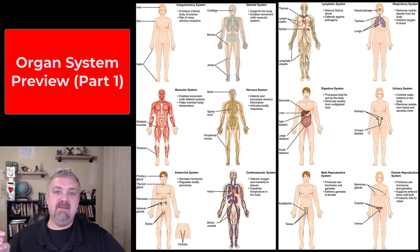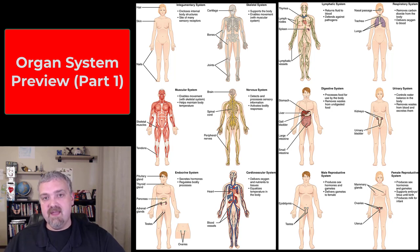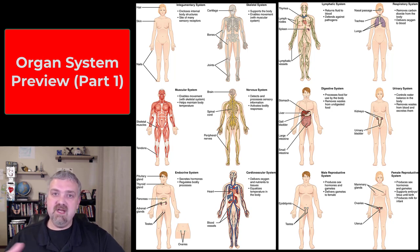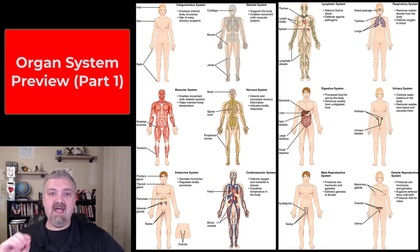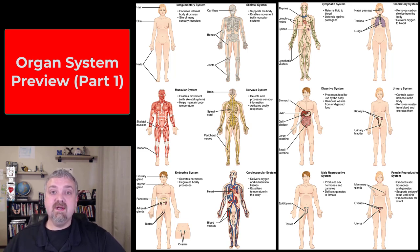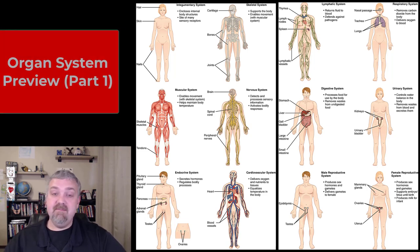Once we've covered atoms and molecules, put them together to form organelles and cells, and then put our cells together to form tissues, after those first few chapters, we'll dive into the organ systems. From there all the way to the end of AMP2, we'll always be focusing on one organ system at a time.